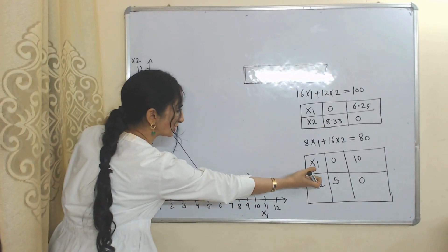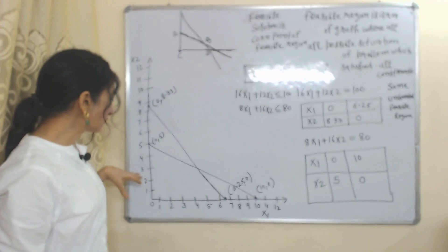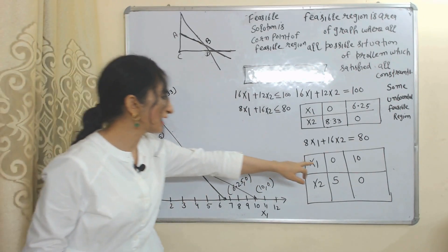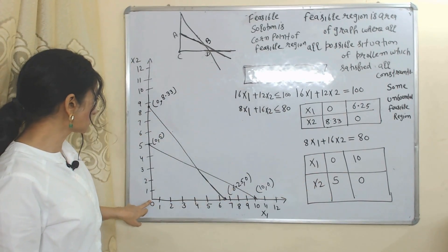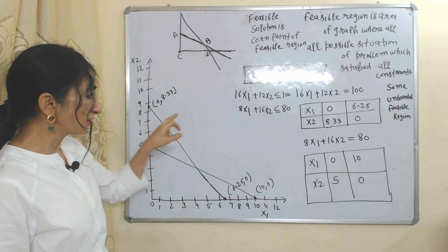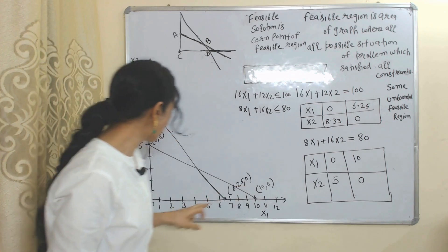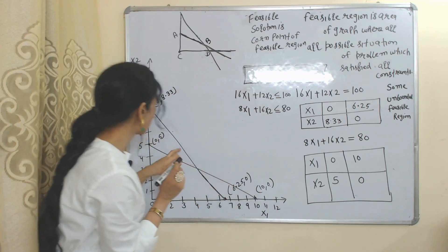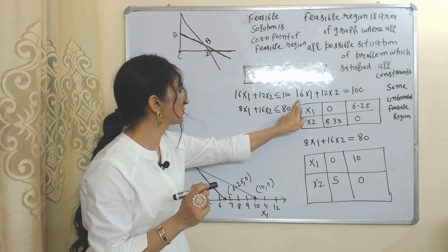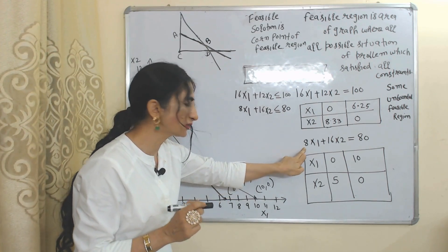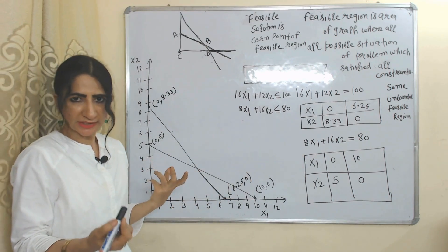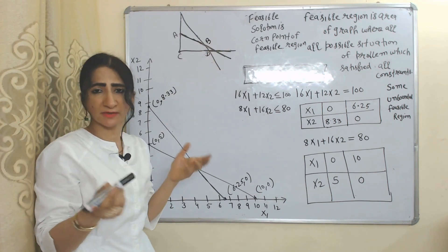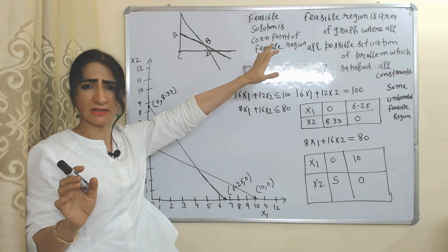Similarly we will plot the second constraint points on the graph. When x1 = 0, x2 = 5; when x2 = 0, x1 = 10. We join these two points. This line represents equation 1 and this line represents equation 2.